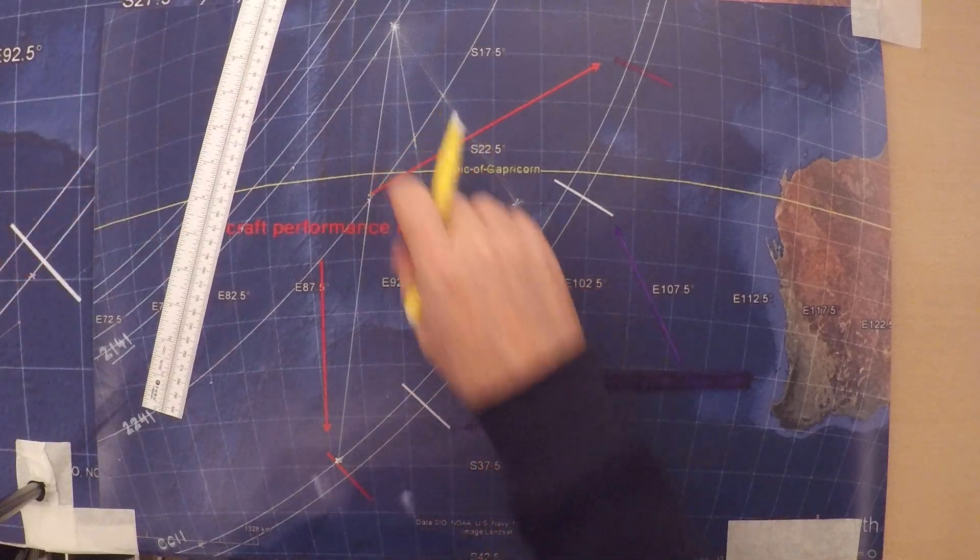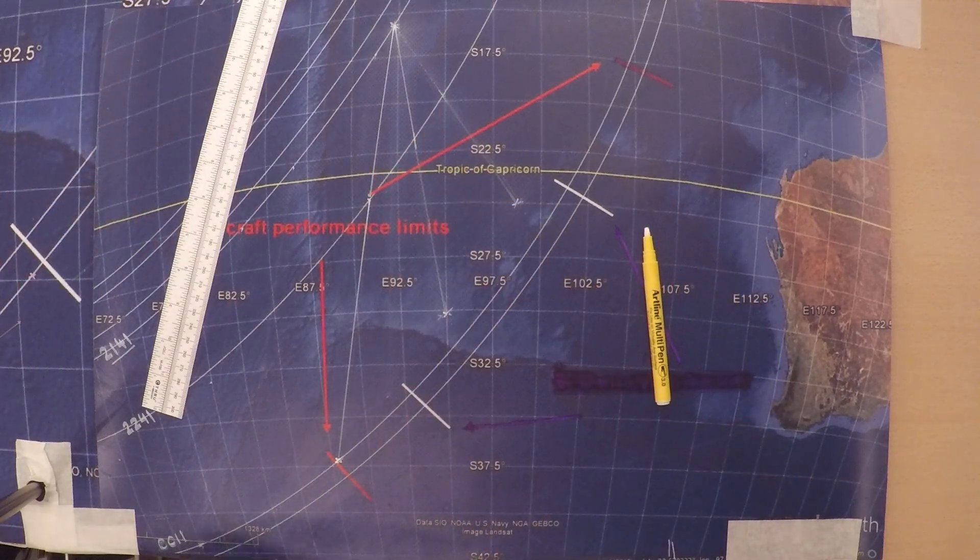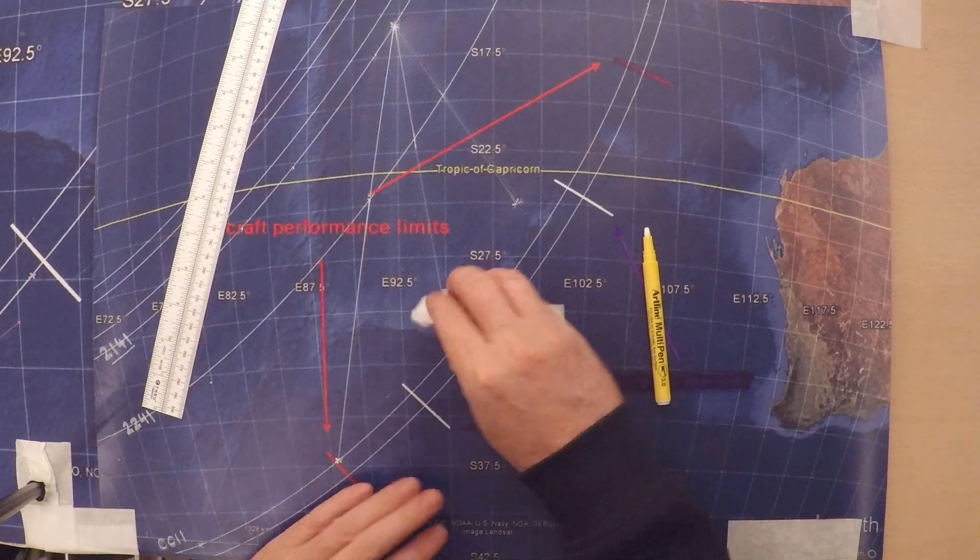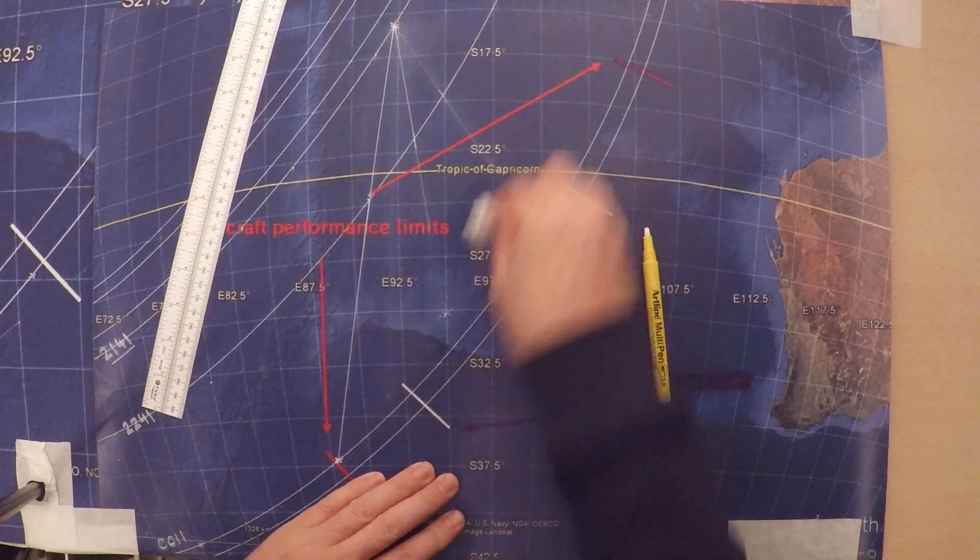So that is the only line where the aircraft could possibly have gone if it crossed that point there. So I could forget about these. I could get rid of those.